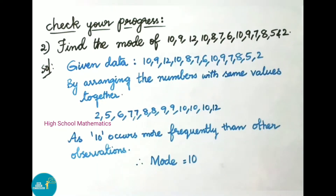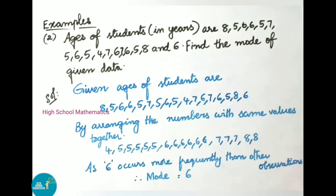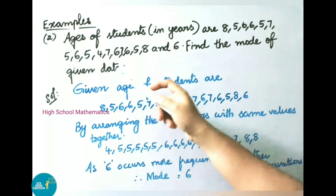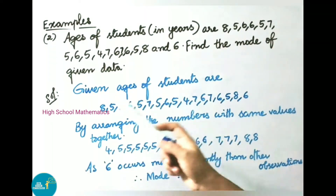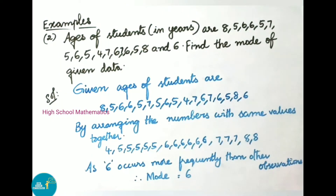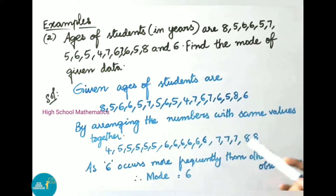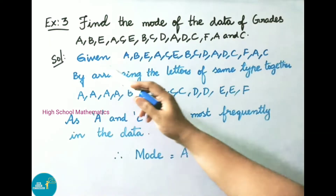Example 2: Ages of students in years are 8, 5, 6, 6, 5, 7, 5, 6, 5, 4, 7, 6, 7, 6, 5, 8, and 6. Find the mode. Arranging in ascending order: 4 appears once, 5 appears 5 times, 6 appears 6 times, 7 appears 3 times, and 8 appears 2 times. Since 6 occurs most frequently, mode equals 6.